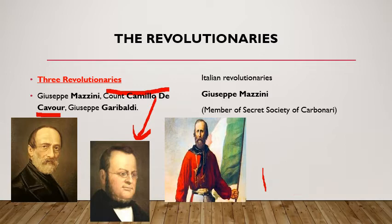Count Camillo de Cavour made considerable efforts for the creation of a modern Italian state, but unfortunately he died only three months after the declaration of a united Italy, on June 6, 1861.